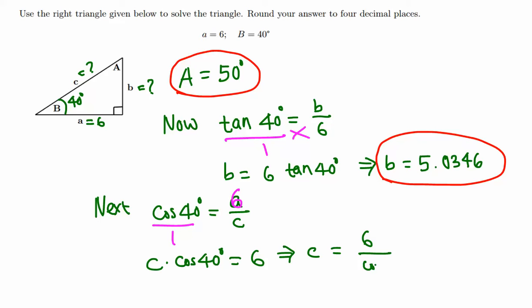Use your calculator now. Using a calculator, we get 6 over cosine 40 is 7.8324. That's the final answer.